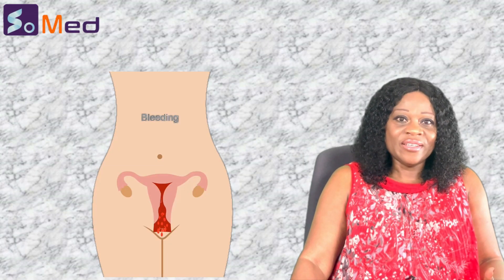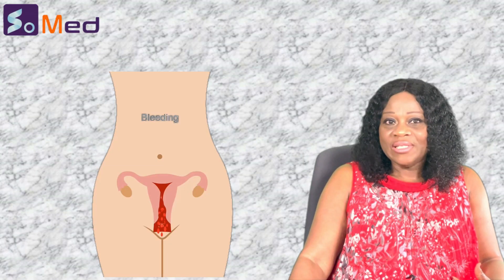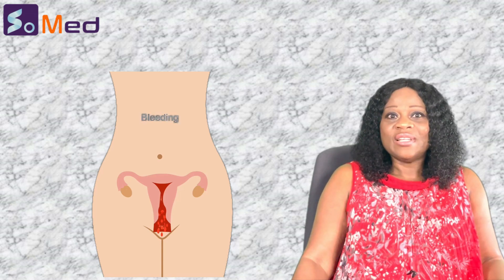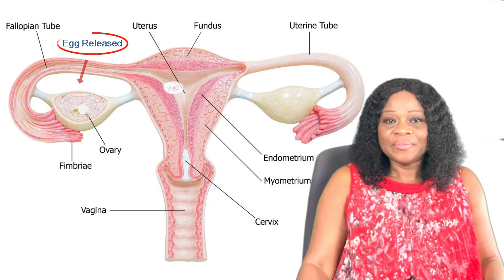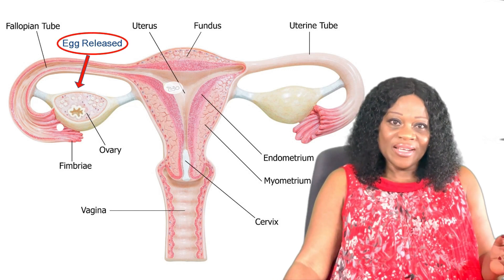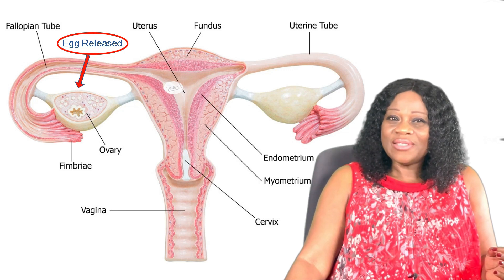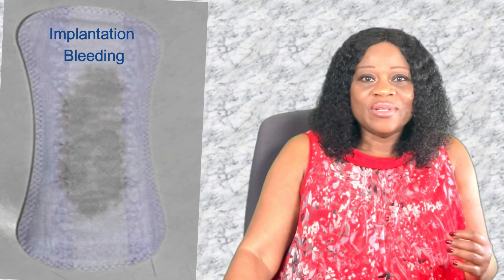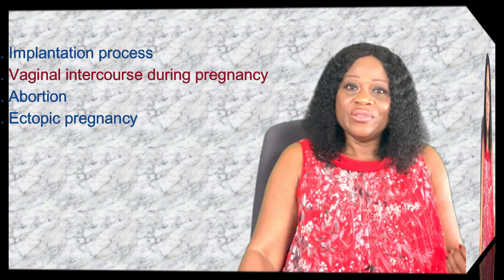Otherwise, the fertilized egg will leave the body, either during a period or as a miscarriage. Meanwhile, unfertilized eggs leave the body through menstruation. In some women, as the embryo implants itself to the lining of the uterus, it causes a light abnormal bleeding from the vagina. This is known as implantation bleeding, which is pinkish or brownish in color.